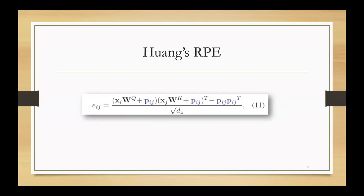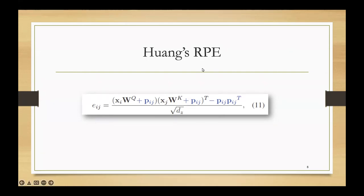The Relation RPE method proposes considering the interactions of queries, keys, and values simultaneously using p_ij, where p_ij represents positional encoding vectors shared among the key, query, and value vectors.